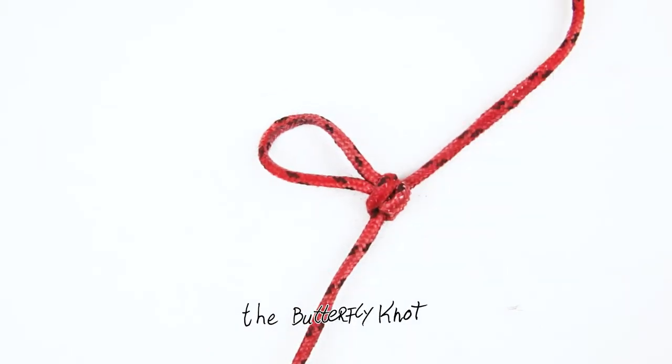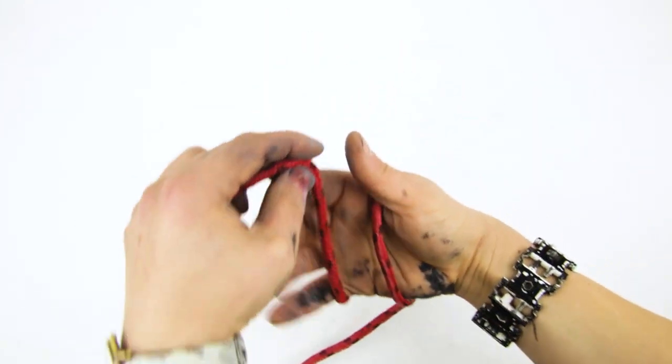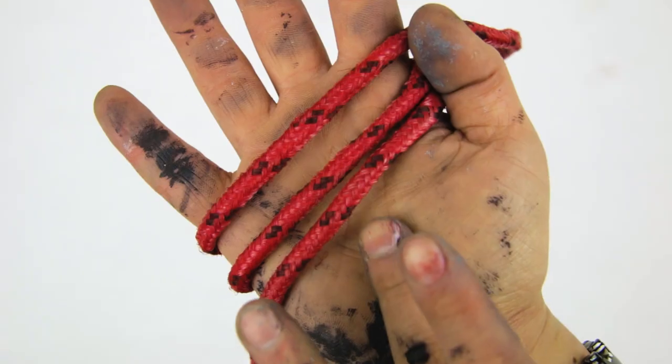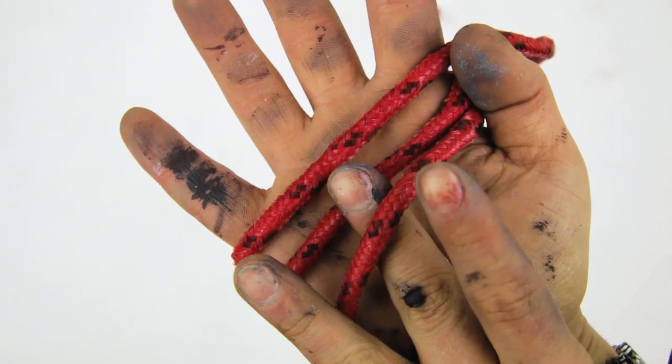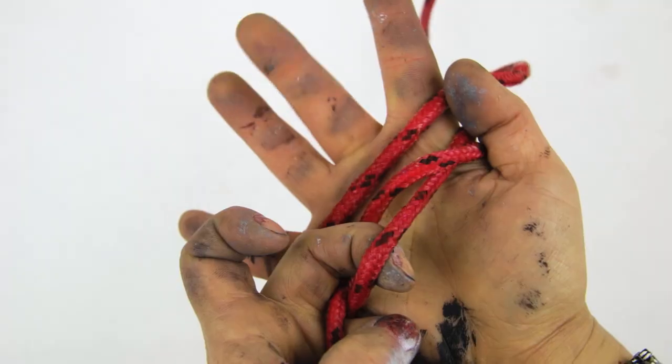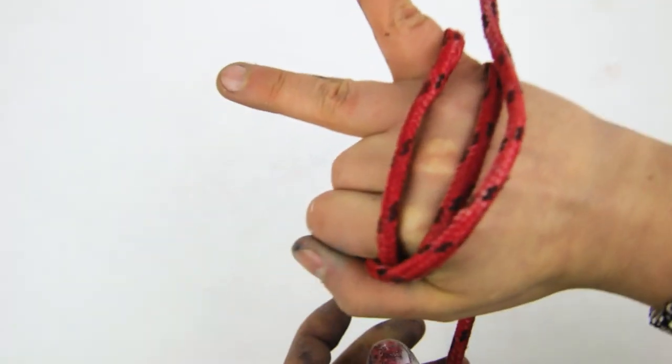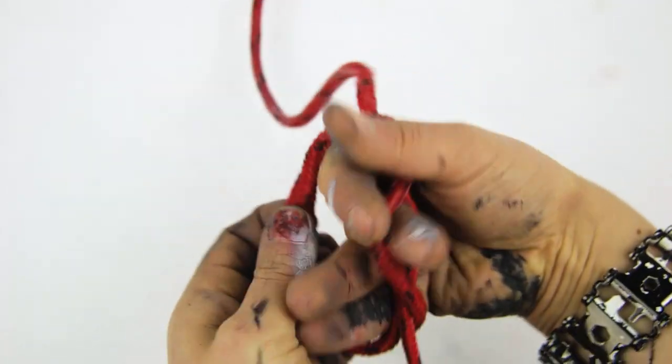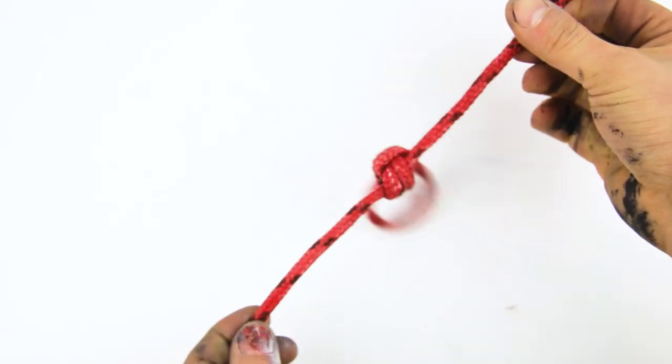I believe this one is called a butterfly knot. You go one, two, three, then under, over, you pull through, you switch fingers, and pull everything over it. Now you've got a quick loop in the middle of your rope.